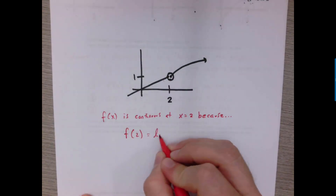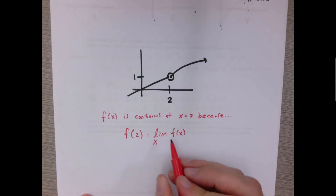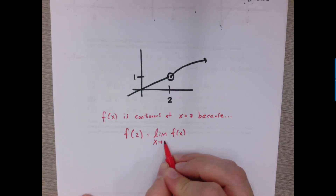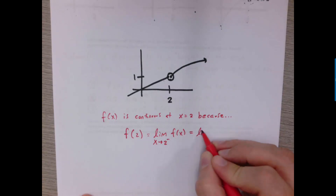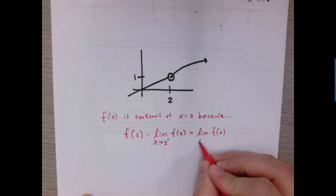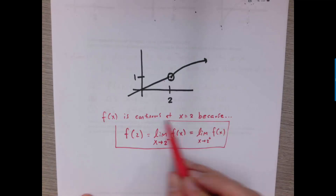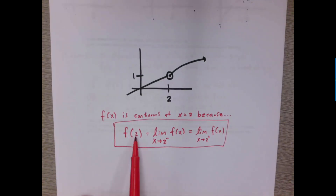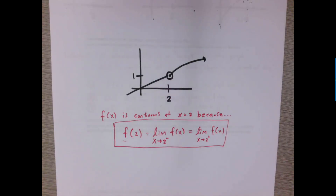...is the same as the y value that we're approaching from the left-hand side — the limit of f of x as x approaches 2 from the left — and that is the same as the y value that we're approaching from the right-hand side — the limit of f of x as x approaches 2 from the right. This very concise statement is making three different claims: it's saying that this point exists and that it's the same as the limit on both sides, which is all just a fancy way of saying all three pieces of the graph come together.